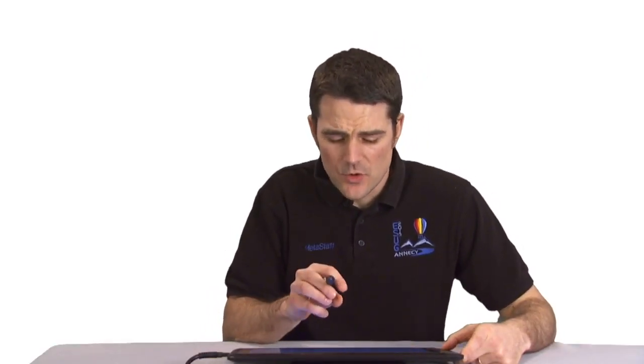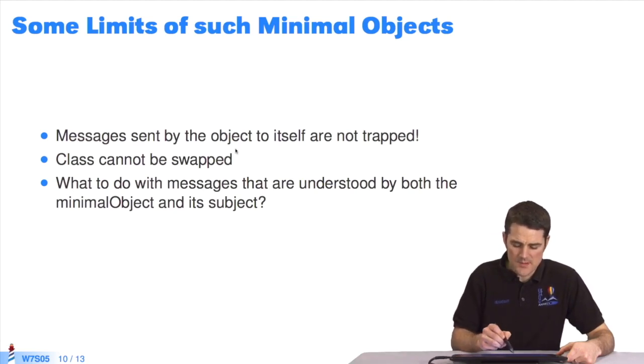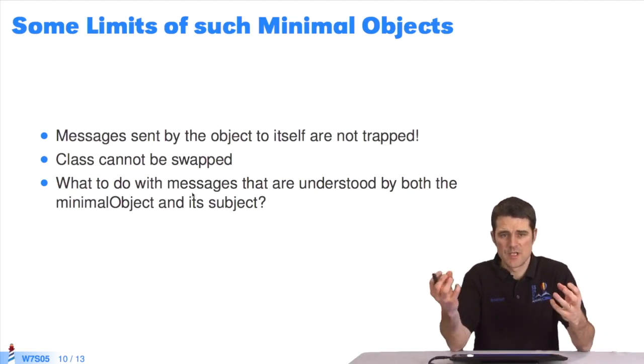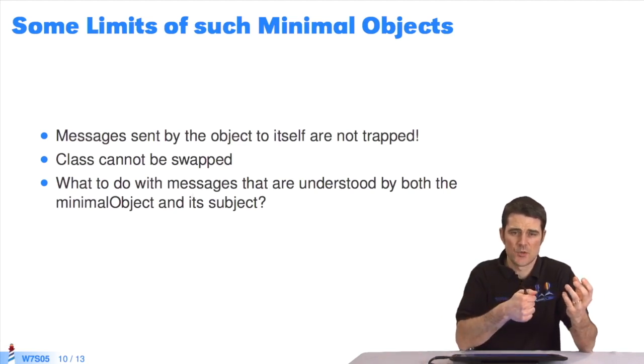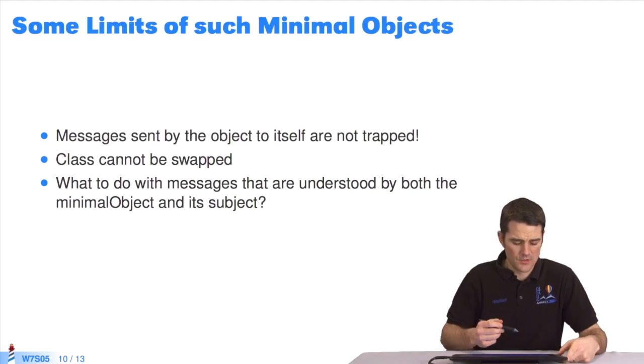There are limits to the proxy's framework, as seen in the last example. For example, we can't capture messages an object sends to itself. That gets tricky. We can't use become with classes, as reflective models have limitations. It's also risky when the proxy and the object to be replaced both understand the same message. When I send the message to the proxy, it will reply rather than capturing it with DNU and transferring it to the target object. Pharo has other more powerful proxy frameworks that trap everything, but they're more complex than this simple example.